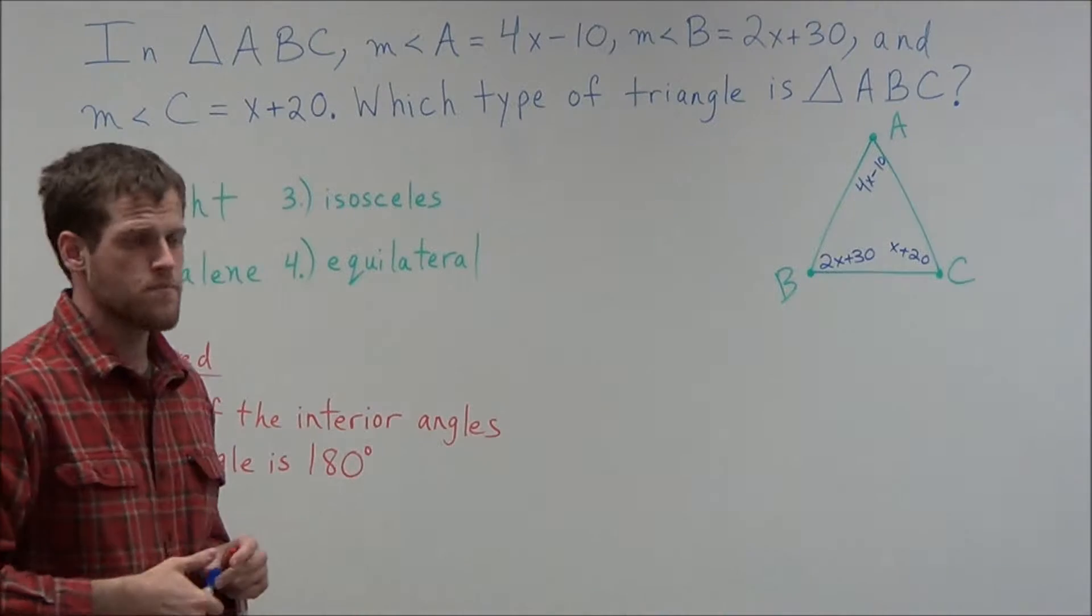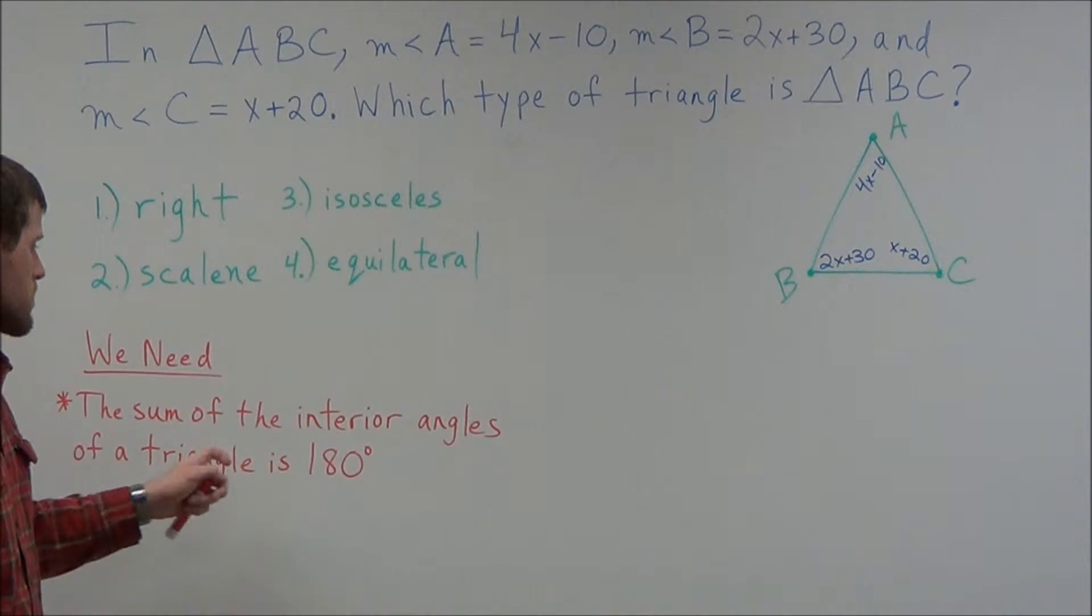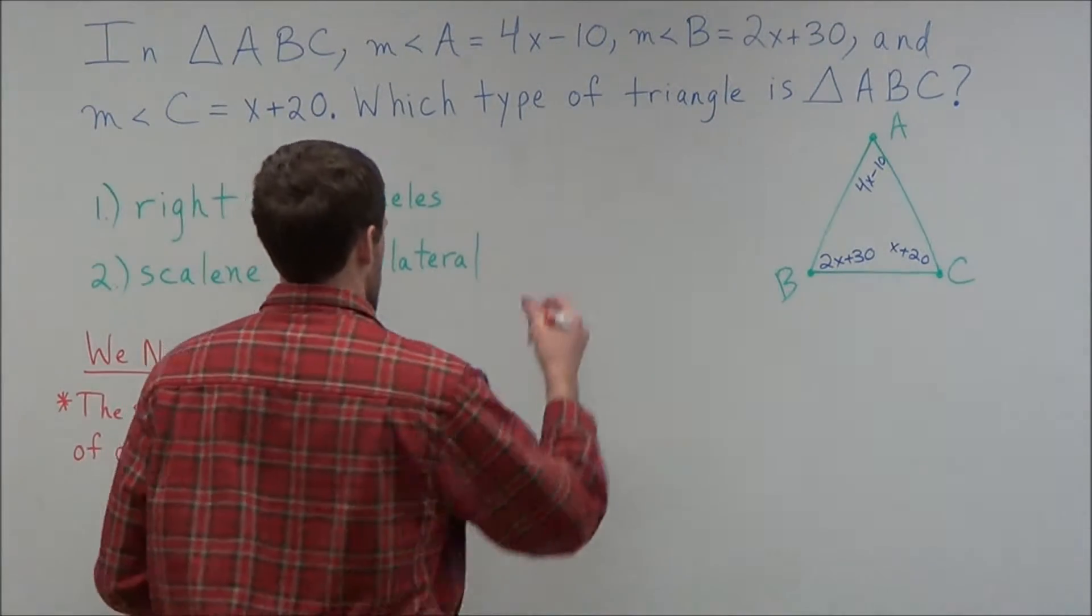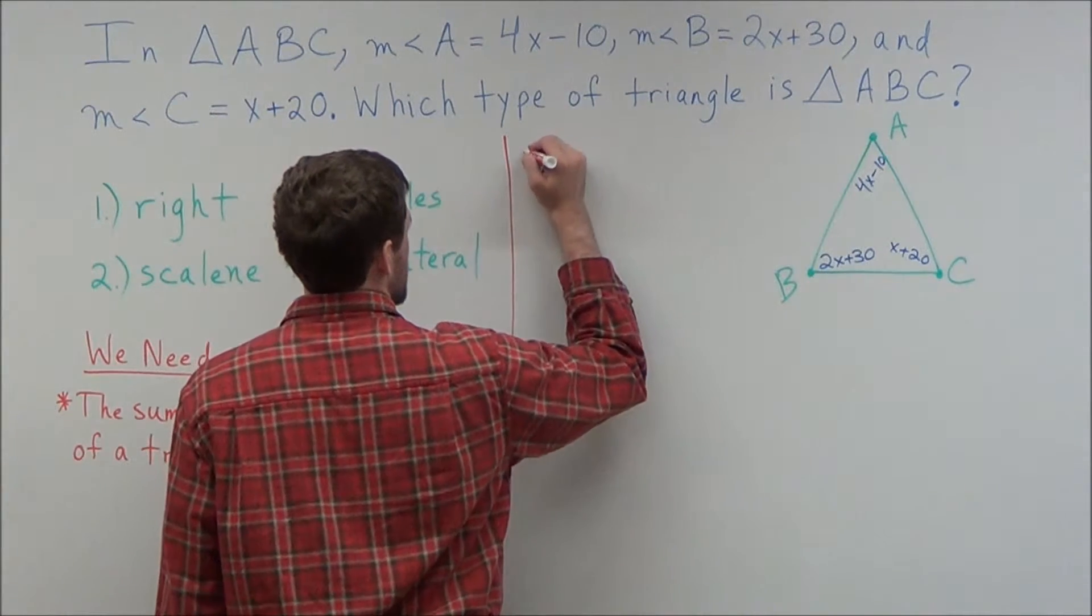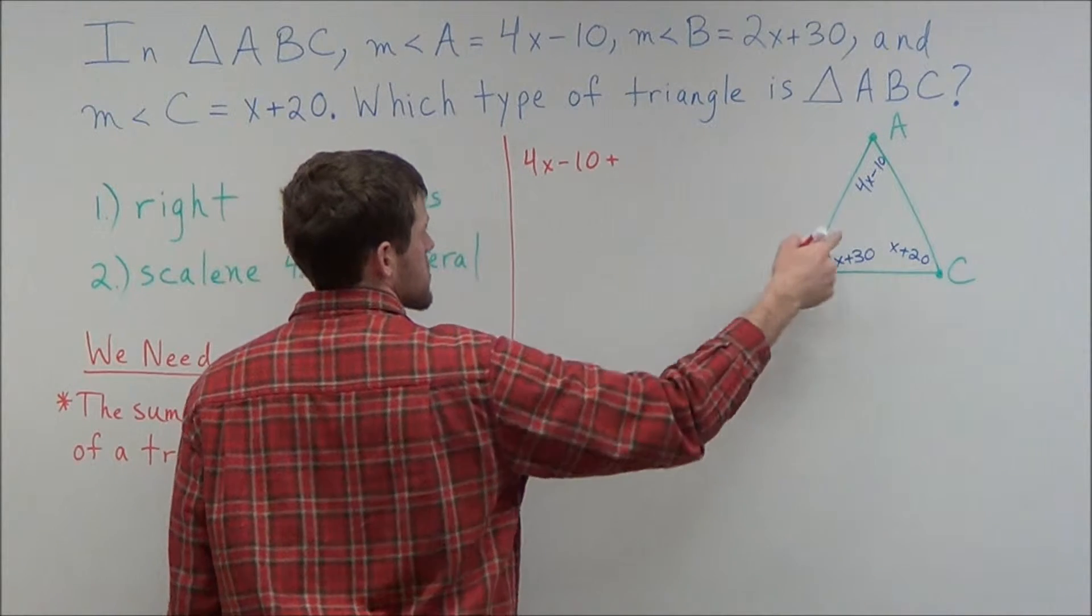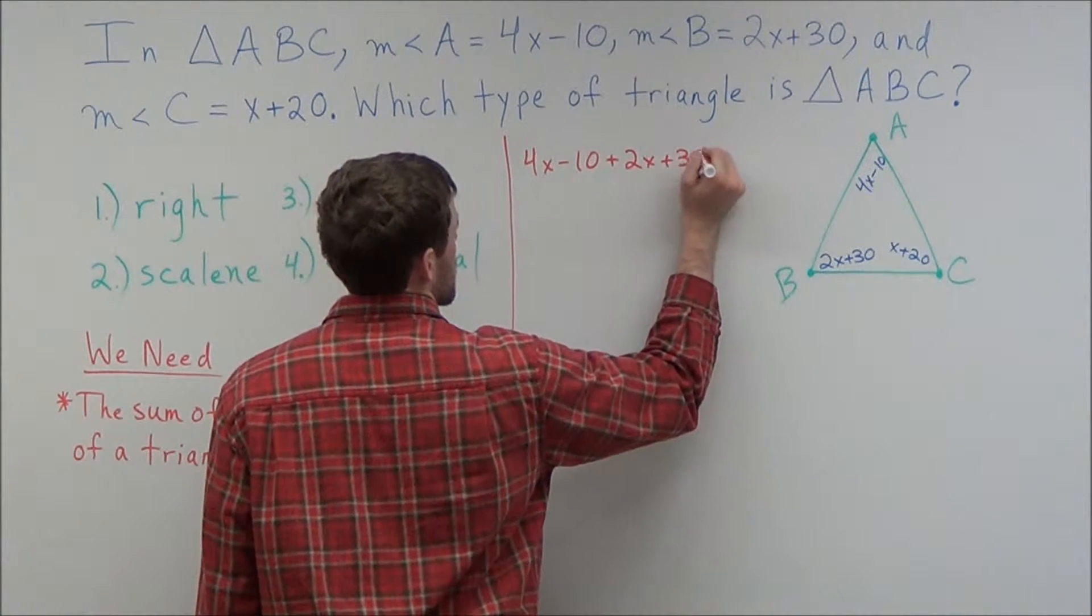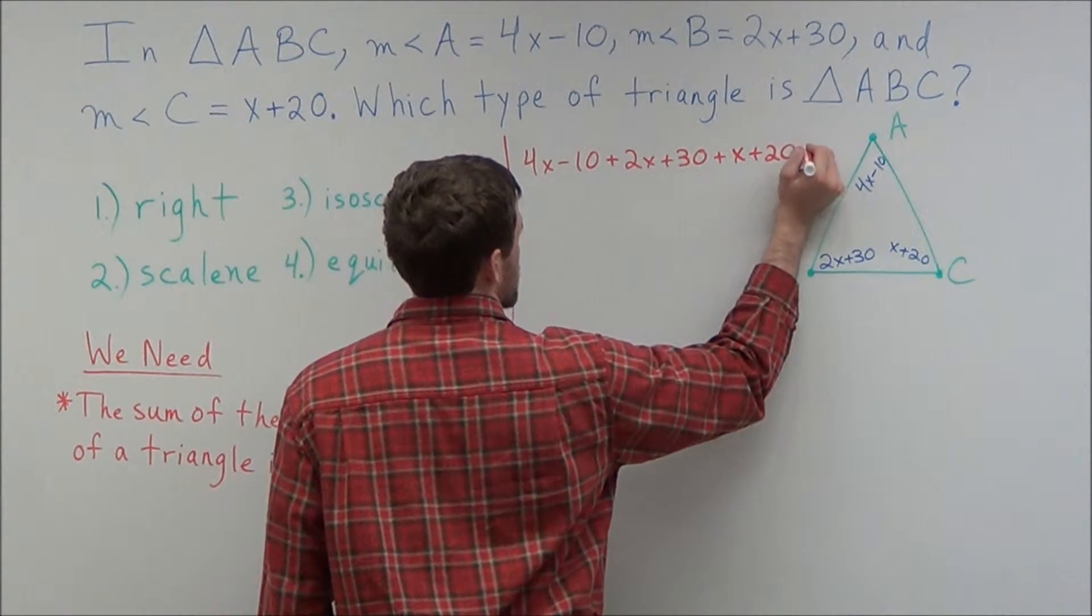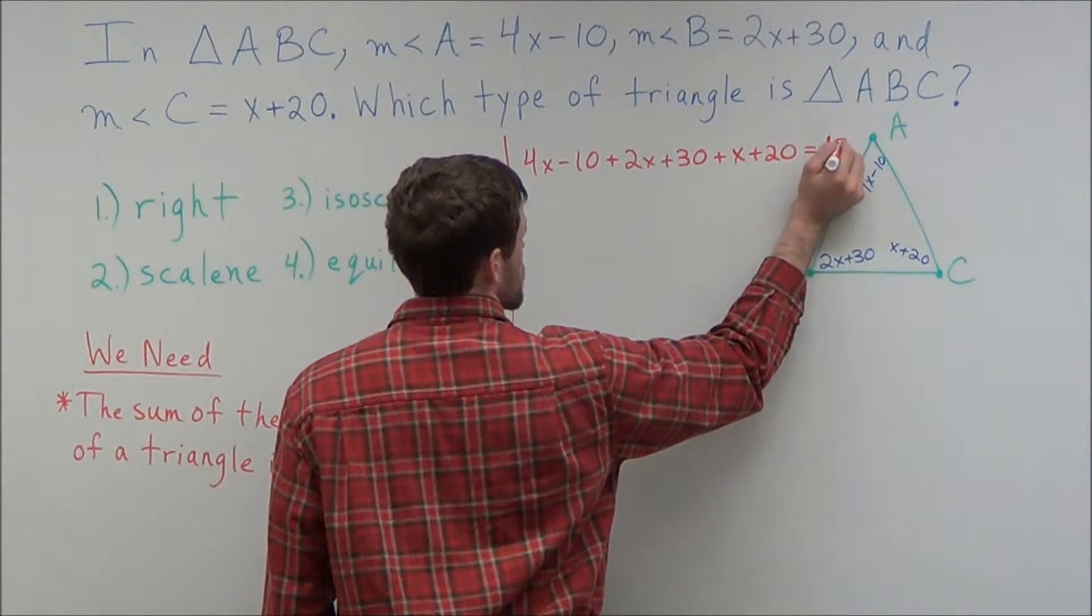So now using this information, we're going to add the interior angles of the triangle and set that equal to 180 degrees. So for the next line, we're adding, we have 4x minus 10, plus 2x plus 30, plus x plus 20.